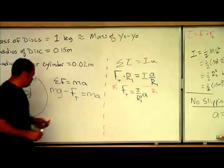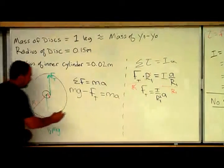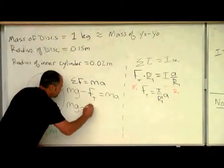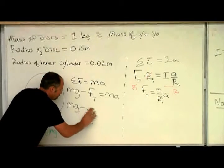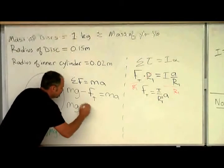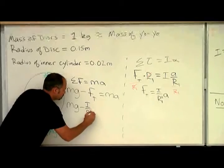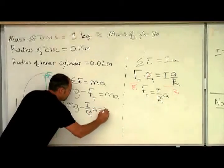Great, let's plug that in for the force of tension here. And I get mg minus i over r1 squared acceleration equals ma.